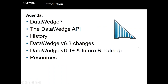The agenda today: we're going to briefly cover what DataWedge is, to make sure everyone on the call is up to speed. Then we'll go over the DataWedge API in general — what it is and its history, since it's been around for a few DataWedge versions and is where we're seeing the most new features. We'll then talk about why 6.3 is really the gateway to start using the DataWedge API, and at the end, we'll cover upcoming changes and how you can influence our future roadmap.